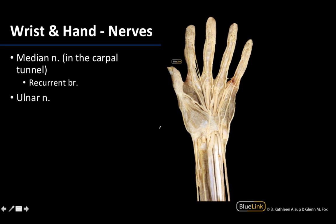There are two nerves that you will be able to see. The first is the median nerve, visible here in the wrist region. This is part of the transverse carpal ligament, or the roof of the carpal tunnel, right there. It will go through this region and then send small branches in specific areas, particularly for cutaneous innervation — most of which has been removed because we are looking at a deeper dissection.